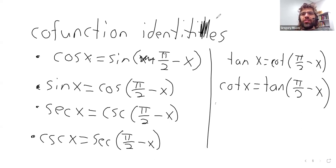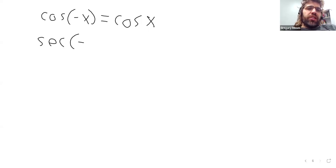The next set of identities that we've already seen before, we didn't, I believe, use the word identity. But we observed that some of the trig functions are even and other trig functions are odd. In particular, the cosine is even and the secant is even. The way you remember this, the cosine, you just have to learn it. But then for the secant, you remember that the secant is 1 divided by the cosine. So the secant inherits the cosine's evenness.